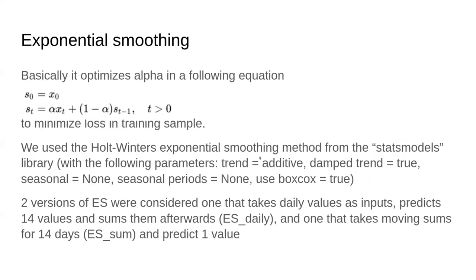We also consider exponential smoothing, as that was one of the best models last year on Russia. We do two versions of it: one goes by daily cases, one goes by moving sum cases. The version that goes by moving sum predicts the 15-day moving sum.